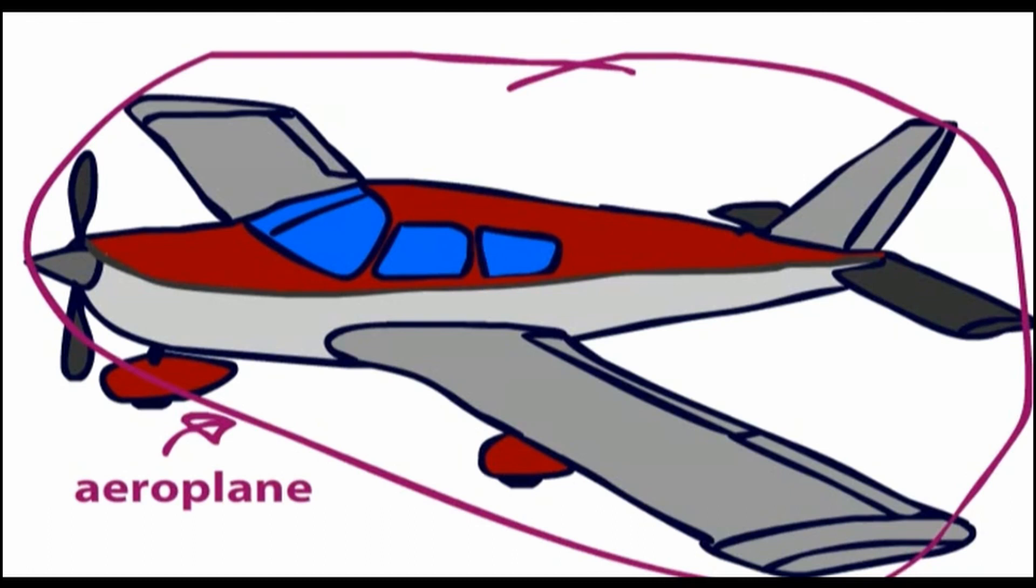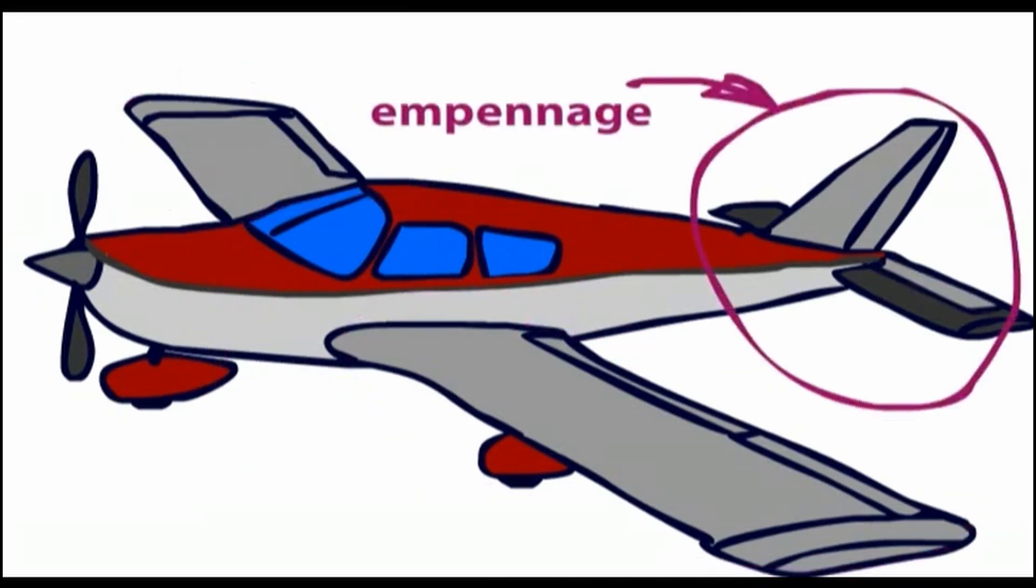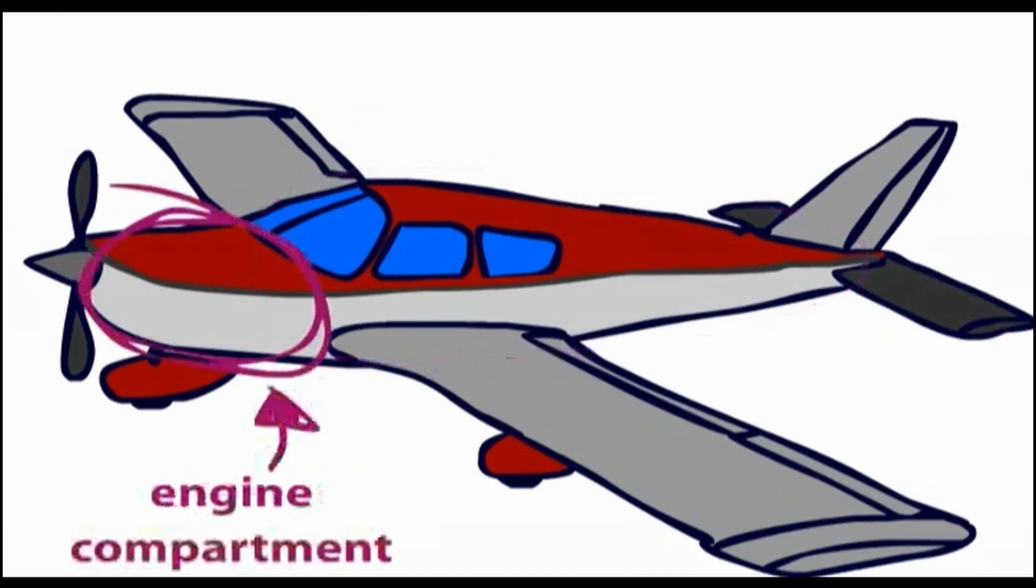The main features on an airplane include the wings, which are one of the more important parts of a plane, the empennage, which is the whole of that back construction there, the fuselage, which is where the cockpit is and where all the passengers and baggage live, and the engine compartment, which contains the engine.